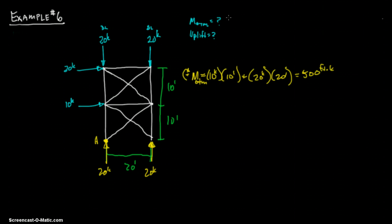Alright. So, that was your overturning moment is 500 foot kips. Now what is your uplift that you have to design for?